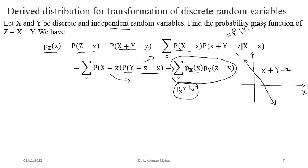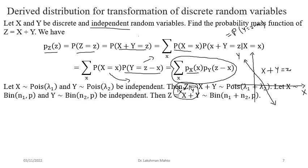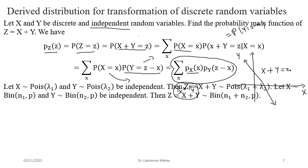As an example: let X and Y both have Poisson distributions with parameters λ₁ and λ₂ respectively, and be independent. Define Z = X + Y. Then we can show that Z has a Poisson distribution with parameter λ₁ + λ₂. This can be established using the discrete convolution formula.